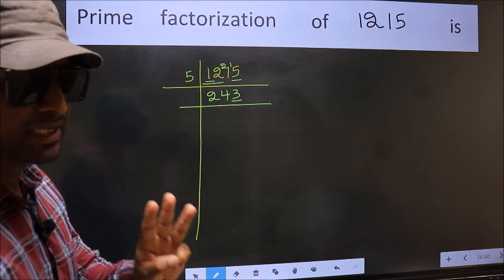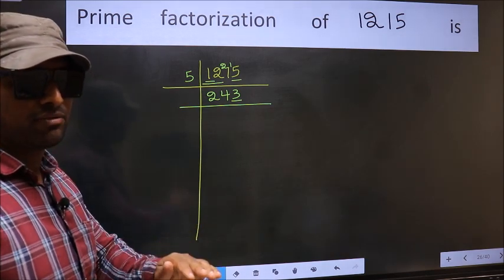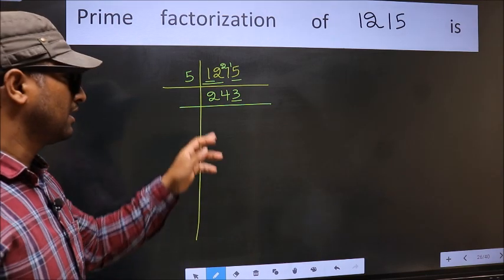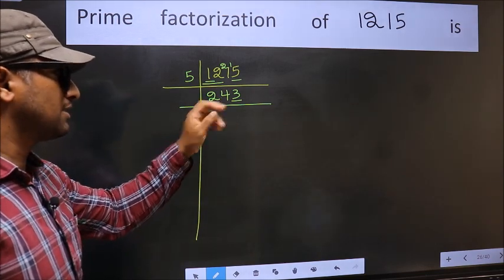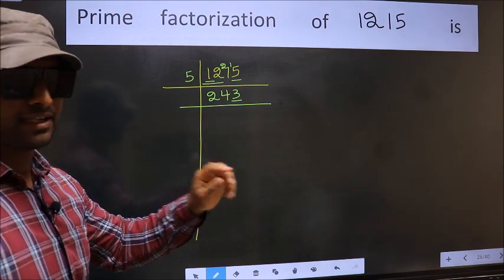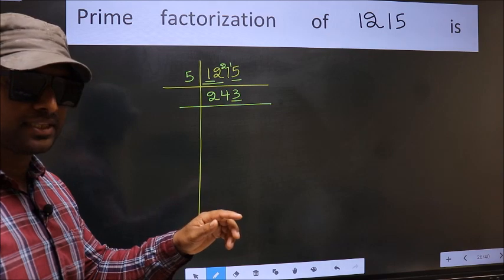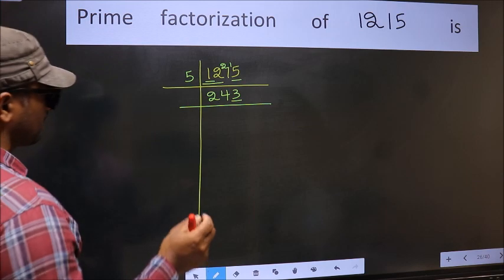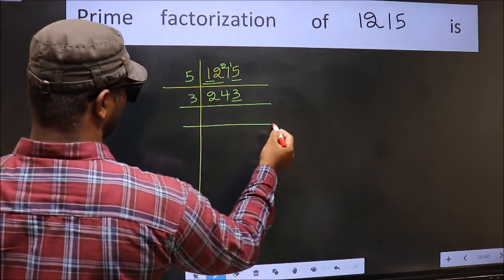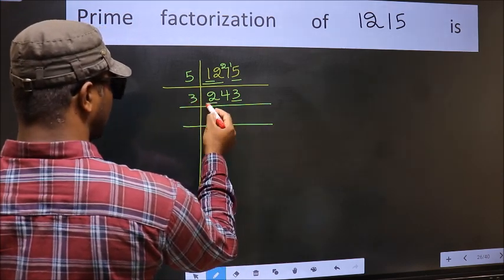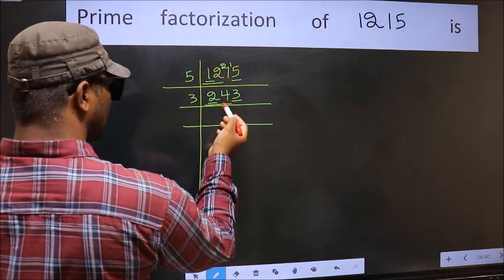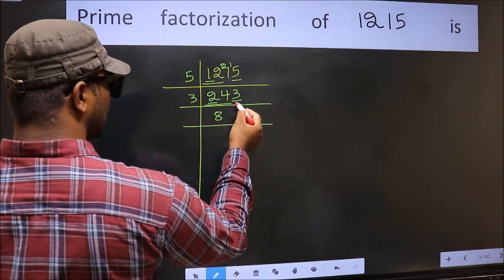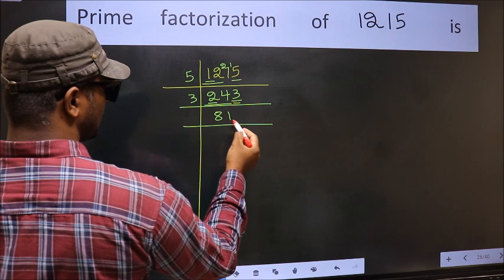Next prime number is 3. To check divisibility by 3, we should add the digits: 2 plus 4 plus 3, we get 9. Is 9 divisible by 3? Yes. So this number is also divisible by 3. So take 3 here. First number 2 is smaller than 3, so take 2 numbers: 24. When do we get 24 in the 3 table? 3 times 8 is 24. The other number is 3. When do we get 3 in the 3 table? 3 times 1 is 3.